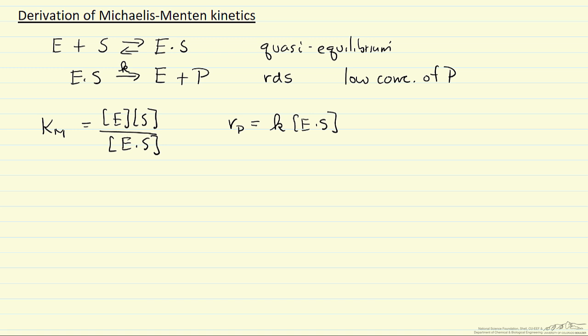And that information is that the total amount of enzyme, total concentration of enzyme, doesn't change. Either it's free, or it's part of this complex. So we're going to take this equation plus this equation to get an expression for the concentration of the enzyme substrate complex, because this is not something we measure. We want our rate expression in terms of things that we measure.